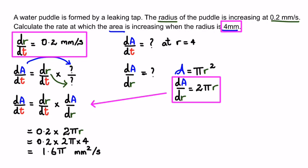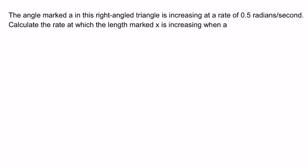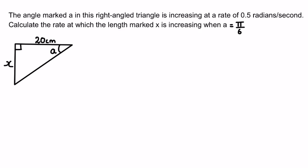The next question: angle a in a right-angle triangle is increasing at a rate of 0.5 radians per second. Calculate the rate at which the length x is increasing when a = π/6. The diagram shows that one side is 20 centimeters. We can write da/dt = 0.5 rad/s, and we're looking for dx/dt.